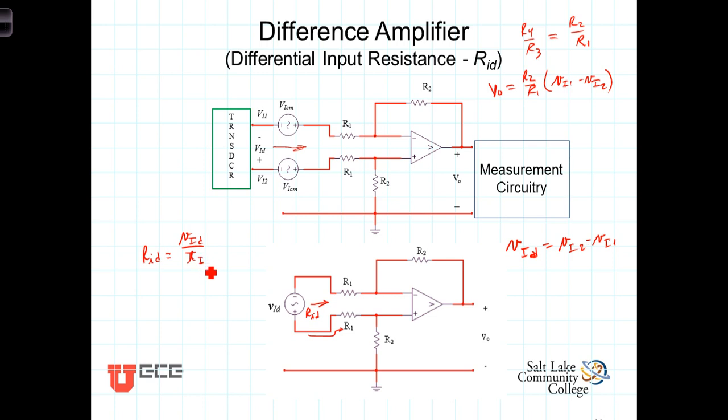Now the current in this form, you'll notice that the current going through this resistor is the same as the current flowing in this path. And so we can write a Kirchhoff's voltage law equation around this loop to determine the input resistance. So starting here we go minus to plus, that will be a negative V sub ID.